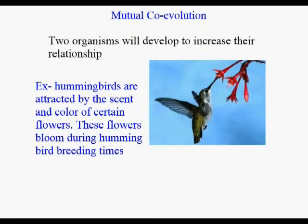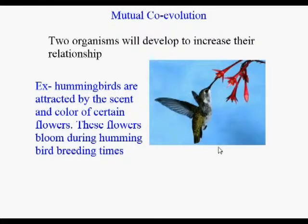The really interesting thing about mutualistic relationships is that the two organisms over time adapt themselves to get into this sort of mutualistic relationship, and we would call that mutual co-evolution. The two are changing so that they can adjust to each other, and over time they form a stronger relationship. Here's another good example — an animal and a plant. In this case, the animal is the hummingbird. Hummingbirds are attracted by the scent and color of certain flowers, and they can only really see reds and purples. These flowers bloom during the time when the hummingbirds also breed, perfectly timed so there will be lots of hummingbirds to spread their pollen. And the color has been adjusted so only the hummingbirds can really see it well.